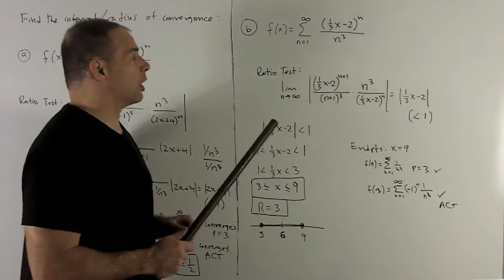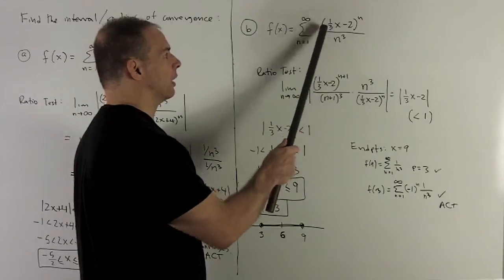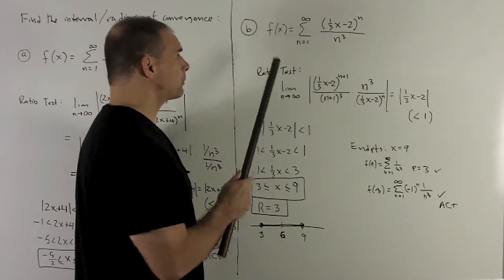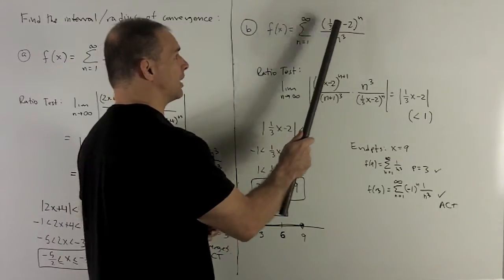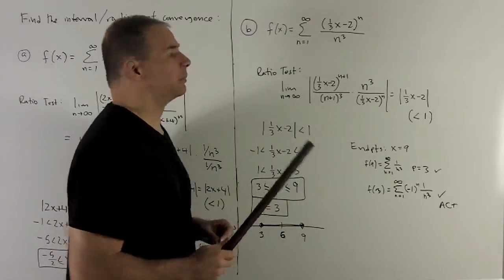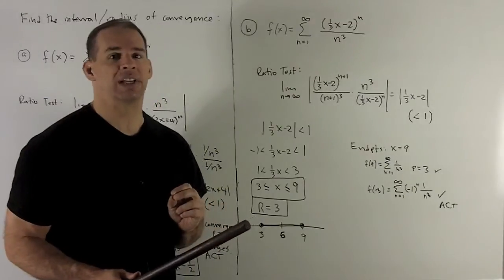Let's try another one where we have the fraction out in front. So f of x going from 1 to infinity, 1 third x minus 2 raised to the nth power over n cubed. Again, we proceed with the ratio test.